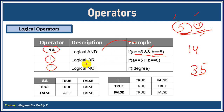Then we have logical OR, where any one condition being satisfied will satisfy the overall condition. So logical OR means if this is true OR this is true, the condition is satisfied. And logical NOT is used to check whether something is not equal or not.